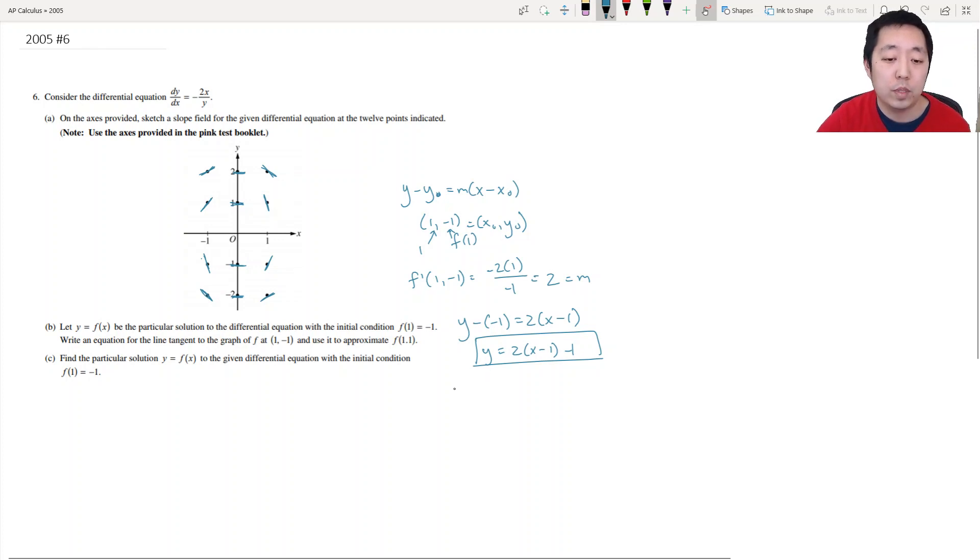Okay so now we want to approximate f of 1.1. And that's just I plug in 1.1 here. So that's 2 times 0.1 minus 1. And that's 0.2 minus 1. That's equal to negative 0.8.